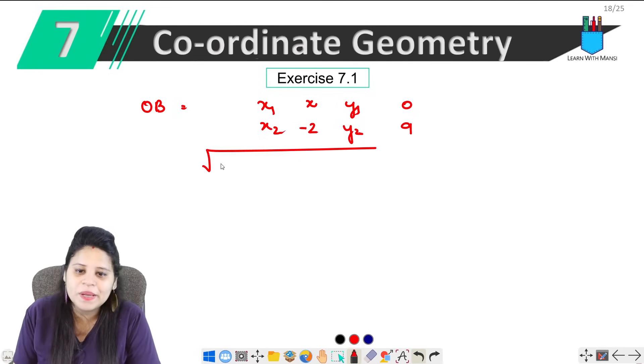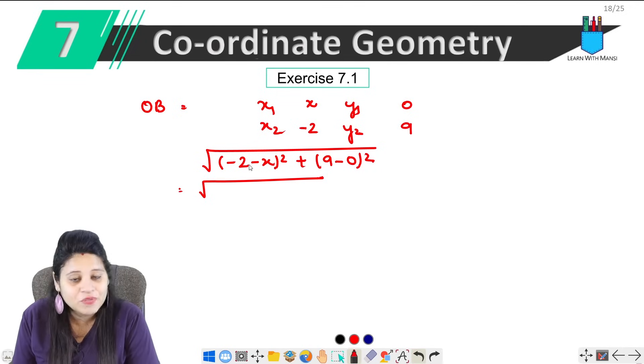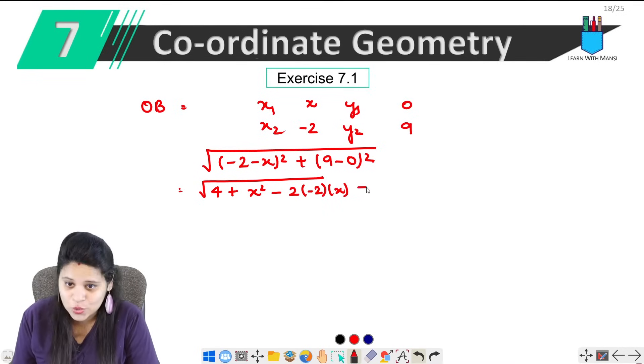Now let's put it in the formula. So (-2 - x)² plus (9 - 0)². Again, formula (a - b)². This is (-2)², which is 4, plus b², that means x². Minus 2ab, this is -2, times x, so minus 2 times -2 times x. Then plus 9².